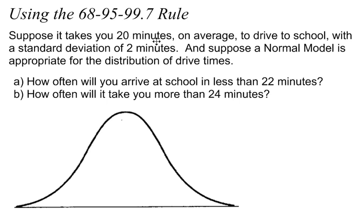Suppose it takes you 20 minutes on average to drive to school with a standard deviation of 2 minutes. This is just something made up that came out of the book. So suppose it takes 20 minutes on average for you to get to school, and when you take all those values, you find the standard deviation to be 2 minutes.